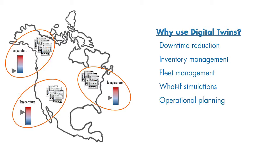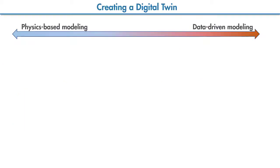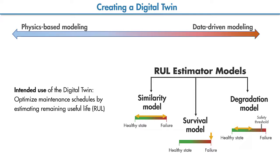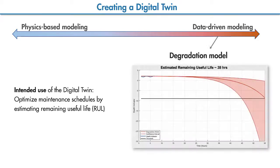Now let's discuss how you can create a digital twin. The modeling method we need to use really depends on our intended use of the digital twin. For example, if we want to predict the remaining useful life of the pump for optimizing maintenance schedules, then we can use a data-driven model such as the ones discussed in the previous videos. Our knowledge of the type of data from the pump will determine which model we'll use. If we don't have complete histories from the fleet but know a safety threshold, then we can use a degradation model to estimate the remaining useful life of the pump.